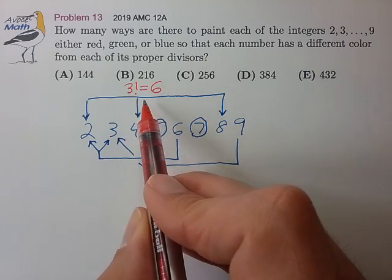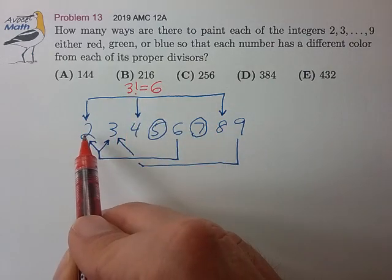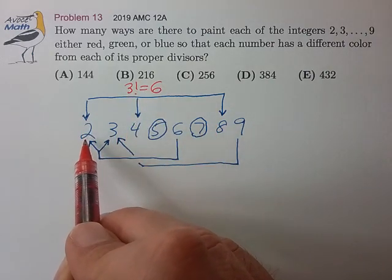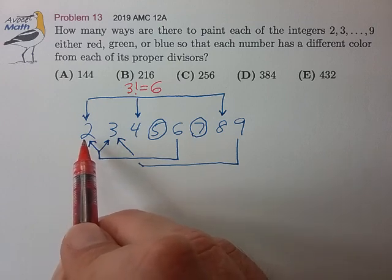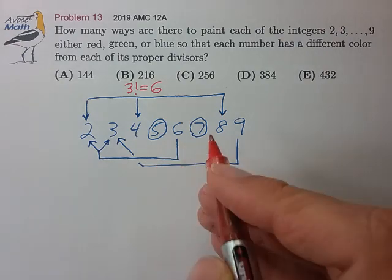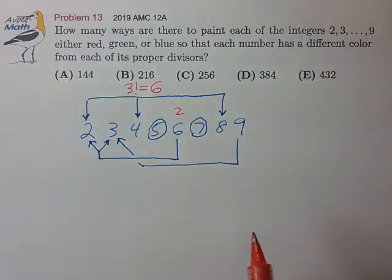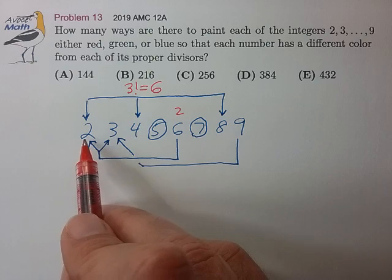Now, once we make this choice of the three colors, 2 is going to end up with some particular color, and no matter how that color is decided or chosen, we're going to have two choices remaining for the number 6 so that it doesn't clash with the number 2.